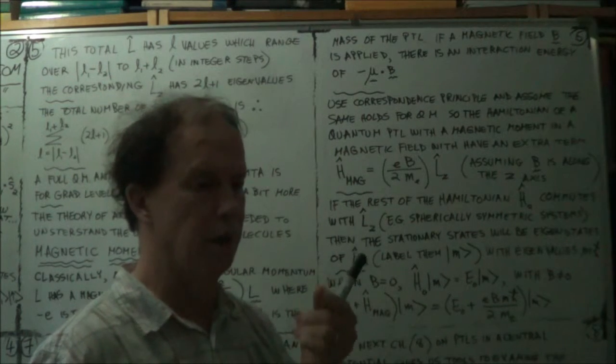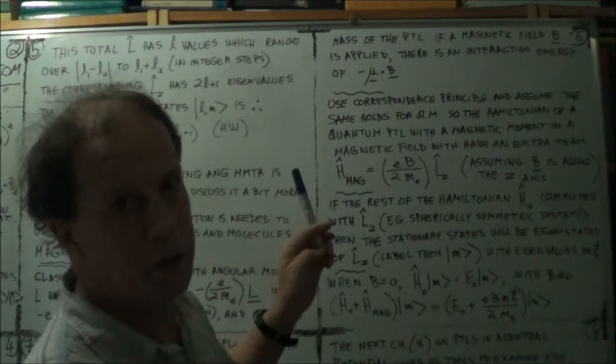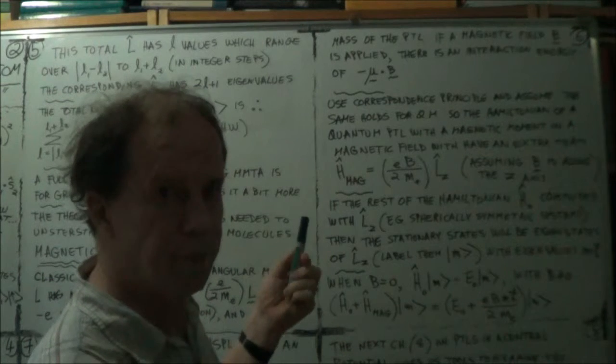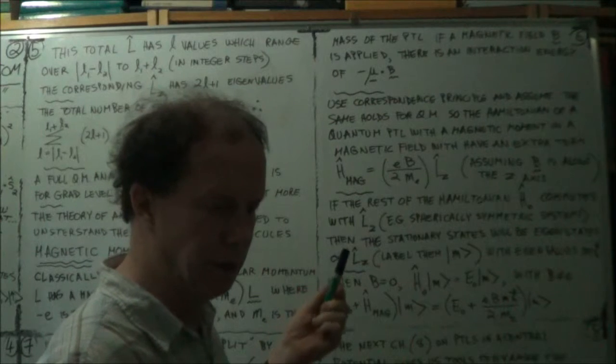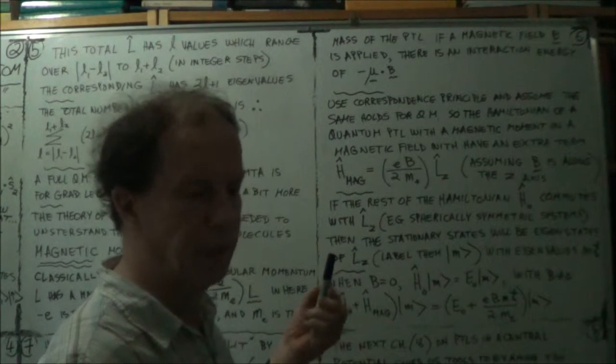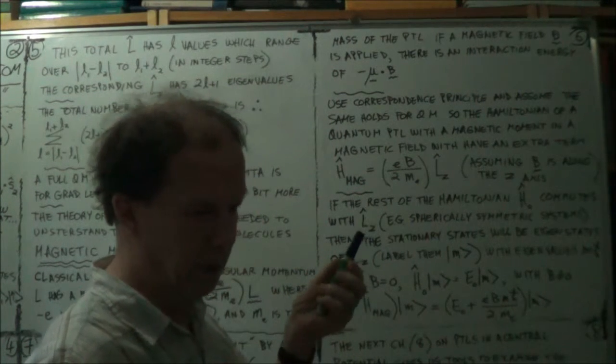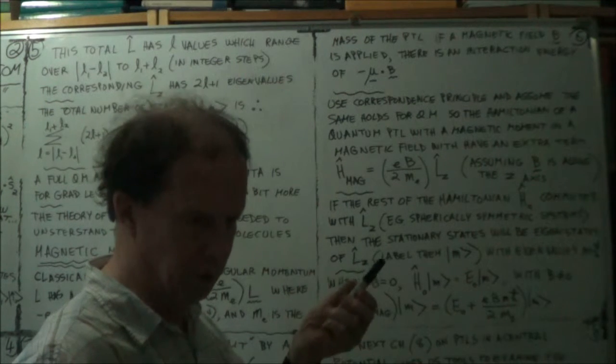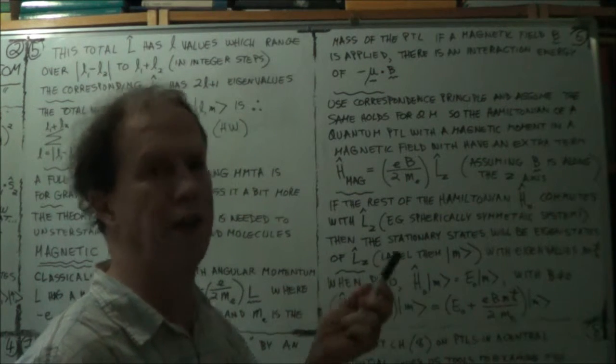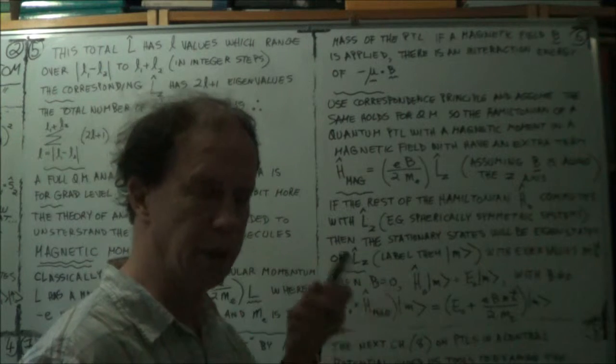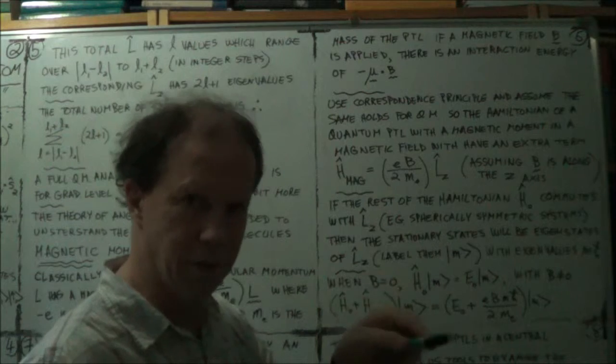So then when you go to the quantum Hamiltonian, that quantum Hamiltonian will also have, in operator form, you convert your classical observables into operators. Like your R would become R-hat and your momentum P would become P-hat. In other words, what is it? Minus i h-bar d/dR or whatever.